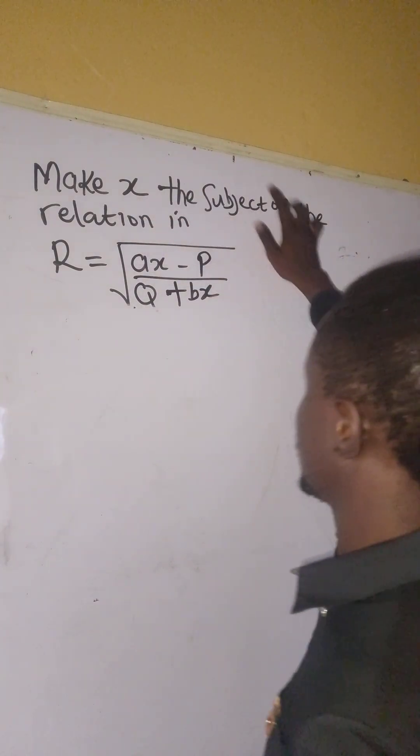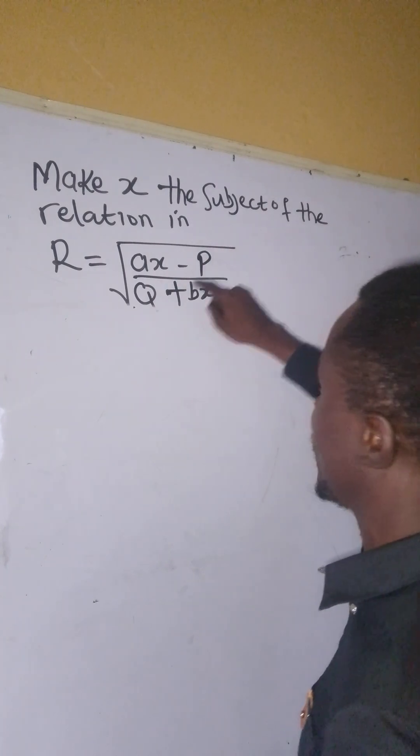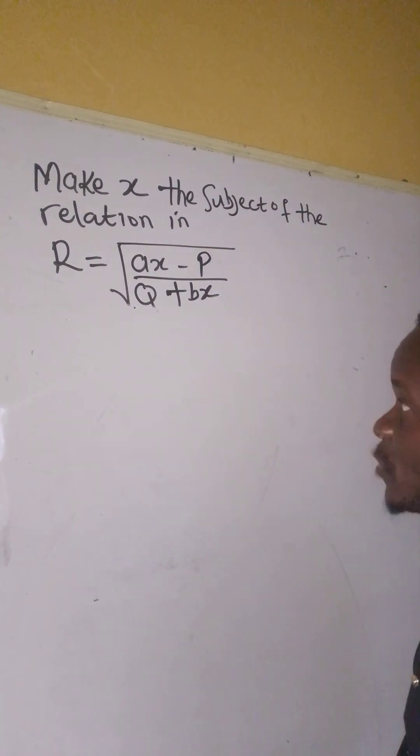The question says: make x the subject of the relation r = √(ax - b)/(q + bx).